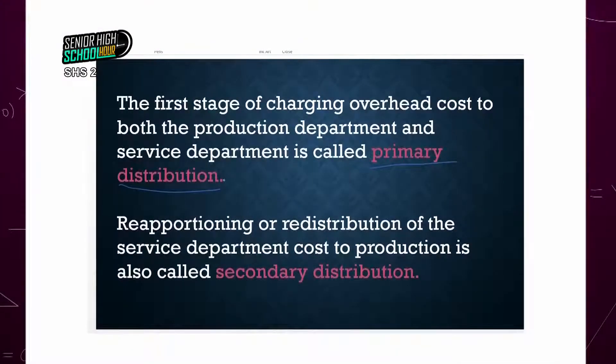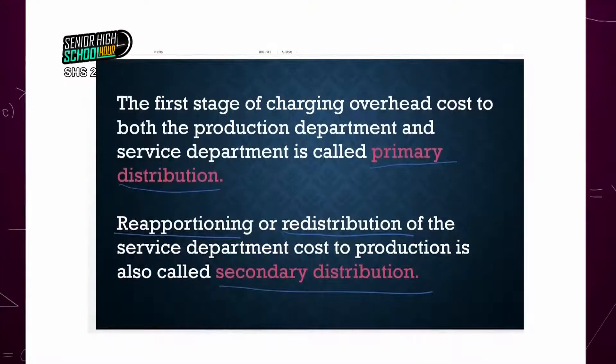The reapportioning and redistribution of the service department costs to the production is called the secondary distribution. We first have to reapportion the costs to both the production department and the service department. After doing that, we need to reapportion it further because the costs incurred by the service department were incurred because of the production department. We term this the secondary distribution of the overhead costs.